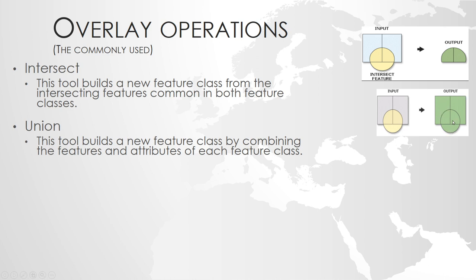Whatever layer something is covered by, it will be included in the union, and they will have attributes from both layers. In other cases, if an area is only covered by one layer, then only the attributes from that layer will be filled in. The attributes from the other layer or layers will be null.